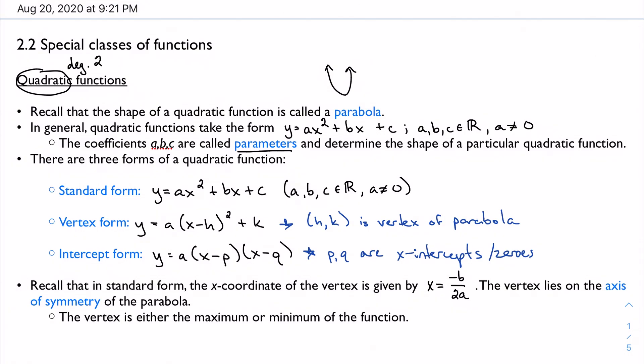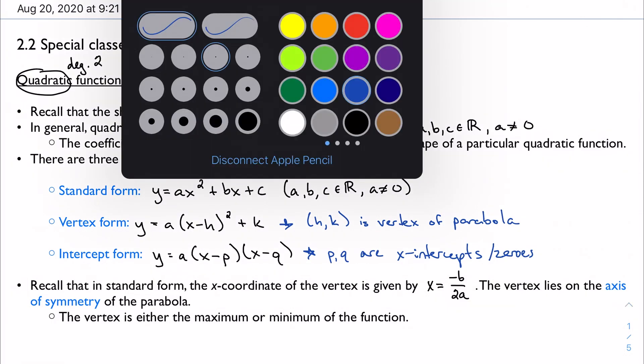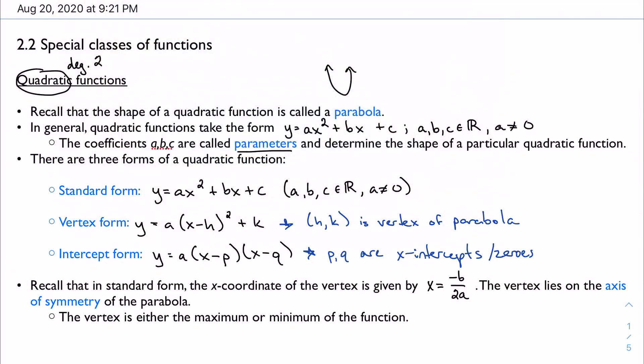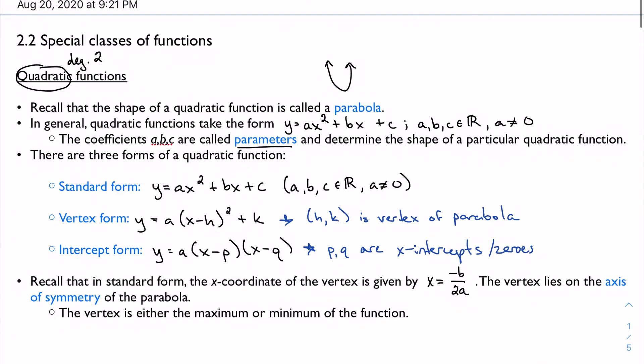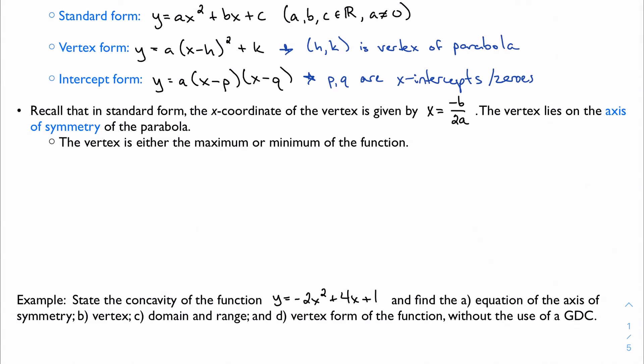So you have three different forms of a quadratic. Well, we're going to focus on standard form just for now. I know you spent a lot of time in the investigation talking about quadratics in vertex form. Well, now we're going to talk about standard form. And in standard form, we can actually find the vertex, even though we're not given it explicitly. We can start by finding the x-coordinate, and that's done using this opposite of b over 2a equation.